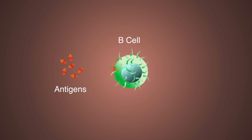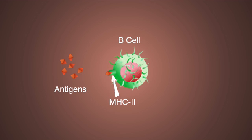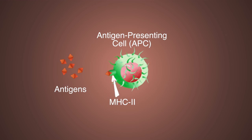The B-cell then takes in the antigen-BCR complex and encloses it in a vesicle. Inside the vesicle, the antigen gets broken down into smaller pieces called peptides. The B-cell then presents these peptides on its surface using molecules called MHC class 2 molecules. Now the B-cell is acting like an antigen presenting cell, or APC — presenting the antigen on the surface of the cell. The name makes sense.